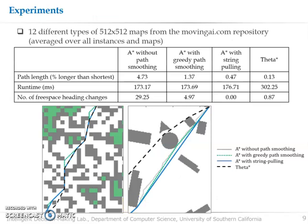We conducted comparative experiments with the original shortest grid path, which is A star without path smoothing, A star with grid path smoothing, and theta star. We considered 20 different types of maps from the moving AI repository and averaged the result over all instances and maps. The figure shows the path from A star without path smoothing in gray, A star with grid path smoothing in dotted green, A star with string pulling in blue, and theta star in dashed black line. In terms of path length, which is given as an optimality gap from A star's shortest path, theta star achieved the shortest path length with 0.13%, followed by string pulling and grid path smoothing, and A star without path smoothing.